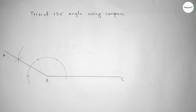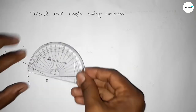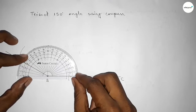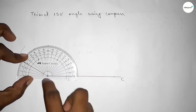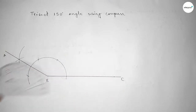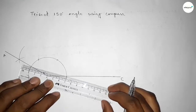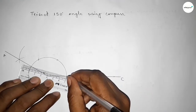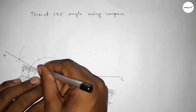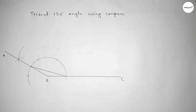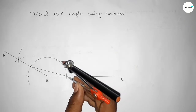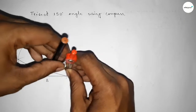Joining this line to get the 150-degree angle, taking here point A. Checking the angle — this is perfectly 150 degrees. Now we have to trisect this angle, so first joining this line. Next, we have to bisect this line.